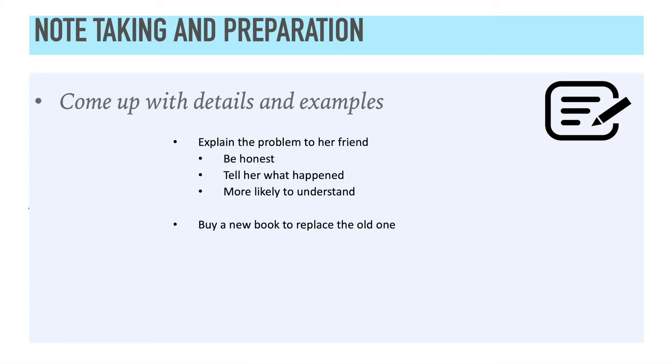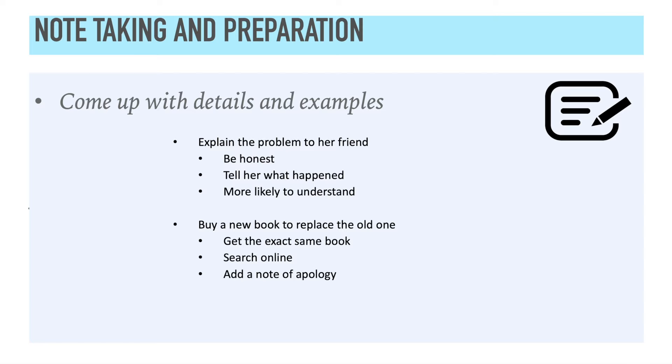All right. What about the second piece of advice? If you remember, the second piece of advice was to buy a new book to replace the old one. Great. How can I support that? Well, I can say, try to get the exact same book. Search for it online. Maybe you can find a secondhand book that doesn't cost as much. Or add a note of apology to the book and hand it back to your friend. So, as you can see, I'm trying to expand the advice that I'm giving and I'm including details and examples.